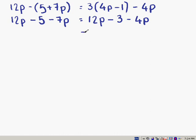The first thing we're going to do on the next line is simplify where we can. So we have 12p and minus 7p on this side, that gives us 5p, and we still have our minus 5. And on this side, the like terms are 12p and minus 4p, which is 8p, and we still have our minus 3.